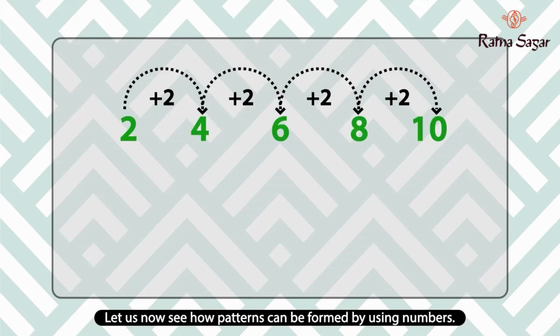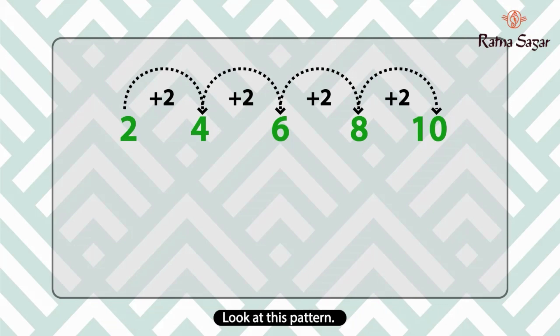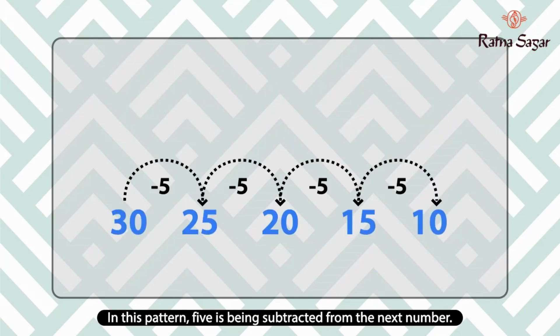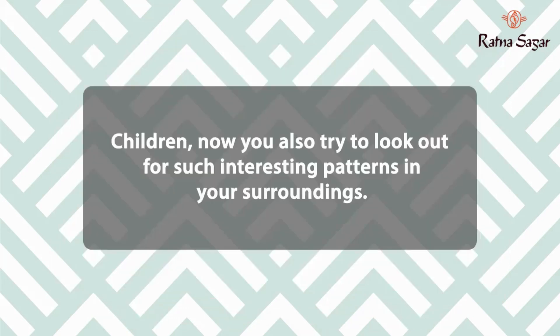Let us now see how patterns can be formed by using numbers. Look at this pattern — here 2 is being added to the next number. In this pattern, 5 is being subtracted from the next number. Children, now you also try to look out for such more interesting patterns in your surroundings.